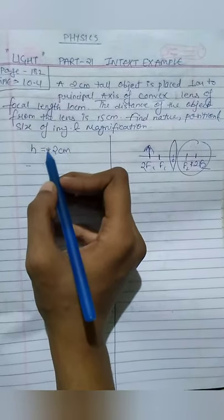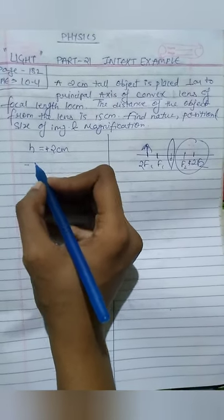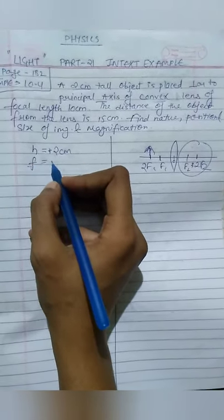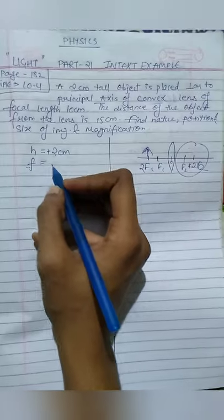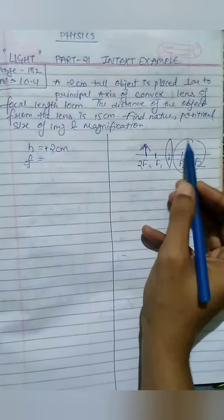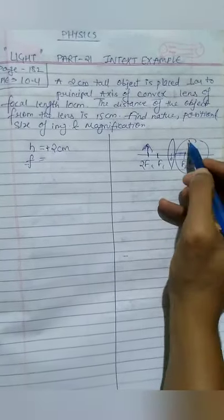Then what is focal length? It is 10 cm, so focal length is given. Focal length is positive because focal length is measured on this side, so this is the right side and the right side is positive.